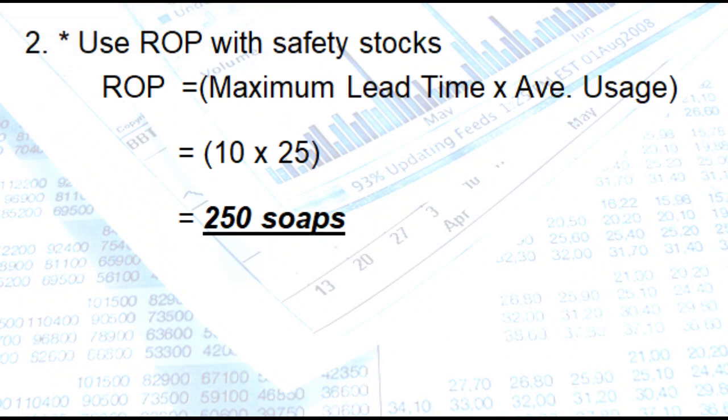Question number 2, what is your reorder point? So we use the formula of reorder point with safety stocks. So that is maximum lead time multiplied by average usage. So you have 10 days multiplied by 25. So you arrive at 250 soaps. So if you reach that level, that is the time or signal that you need to order. And how much are you going to order? You use the optimal order quantity or your economic order quantity formula.